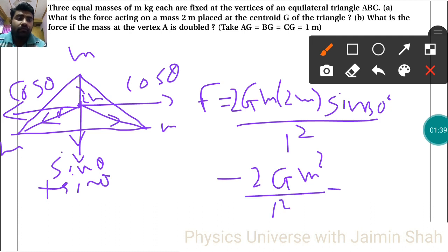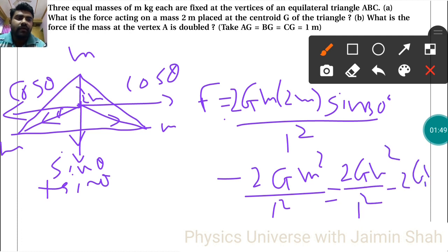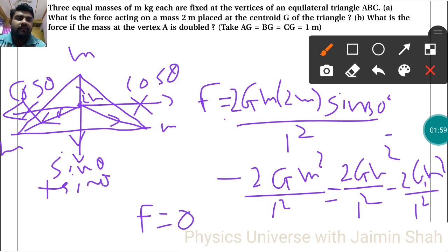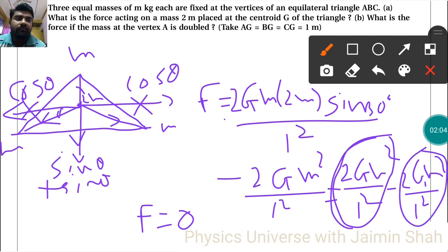Now, 2 × 2 × (1/2) gives 2, so we have 2Gm²/l² minus 2Gm²/l². The cos theta components cancel out on both sides, so only the vertical components remain. The total net force is zero, because the upward direction forces and the downward direction force are equal and opposite. So the first answer is: total force is 0.